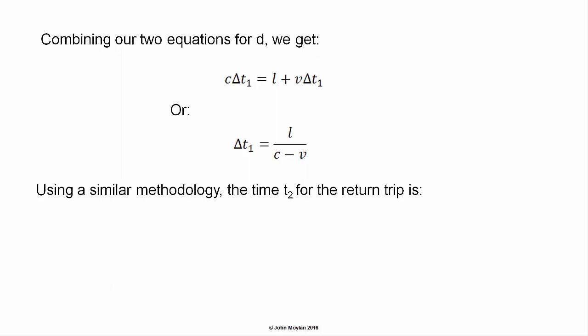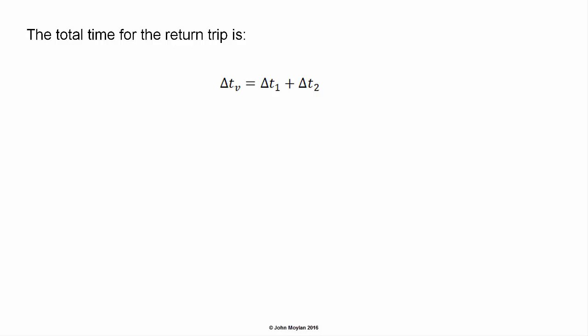Using a similar methodology, the time for the return trip is delta T2 equals L over (C plus V). The total time for the round trip is delta T subscript V equals delta T1 plus delta T2 — the time for the pulse of light to travel forwards plus the time for it to travel back — giving delta T subscript V equals L over (C minus V) plus L over (C plus V), which equals 2L over C multiplied by 1 over (1 minus V squared on C squared).